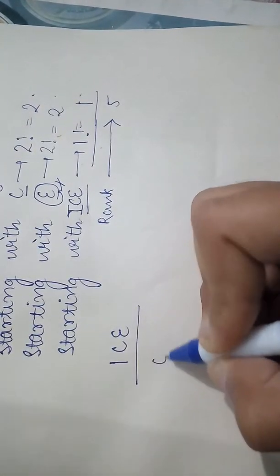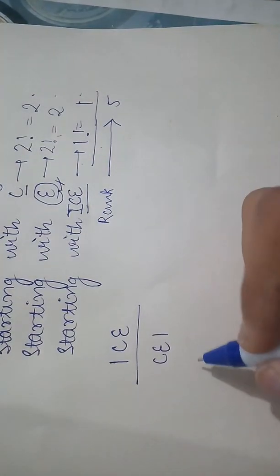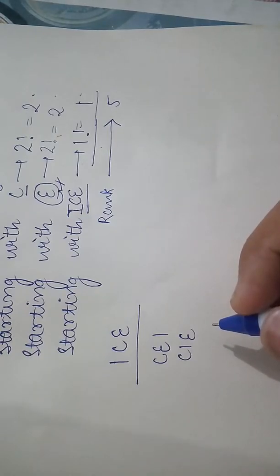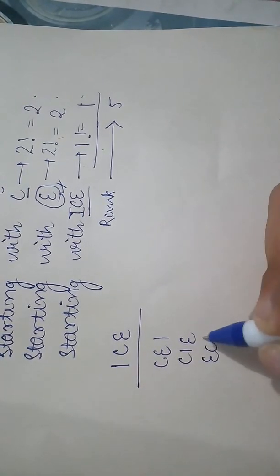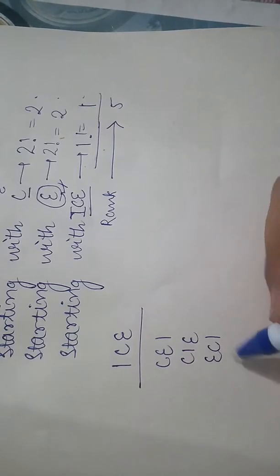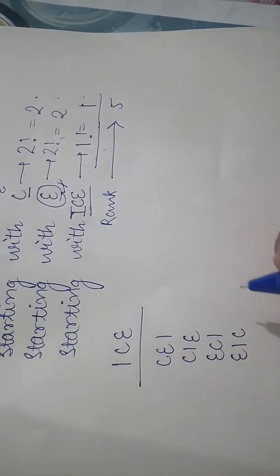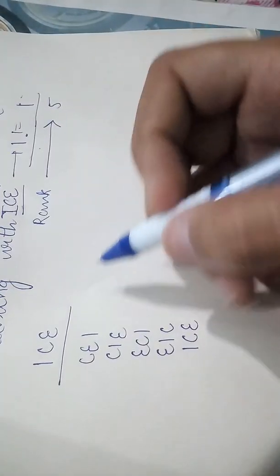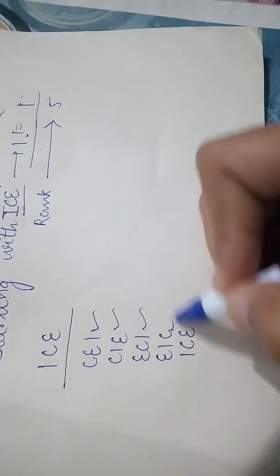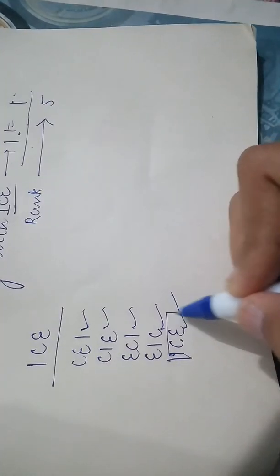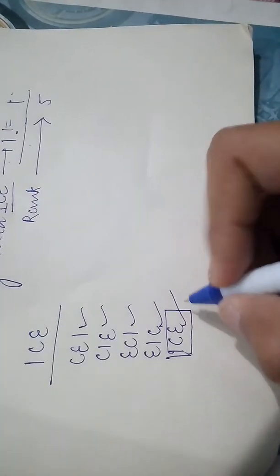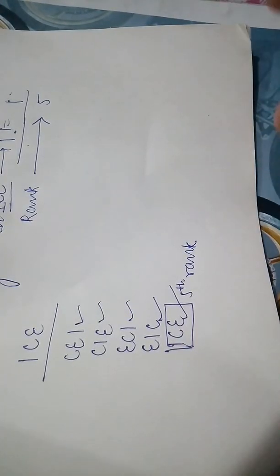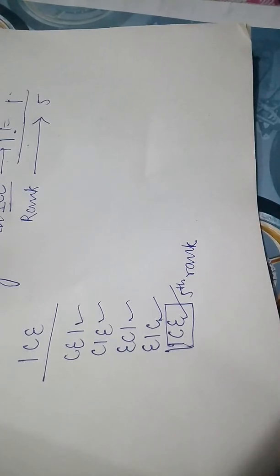First of all we have C E I, secondly we have C I E, then we have E C I, then we have I C E. So our word ice is fifth rank: first, second, third, fourth, and this word is having fifth rank. So this is our check. This way we can verify our results. So that's all for today.